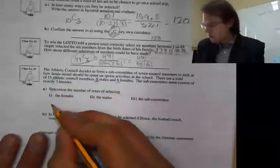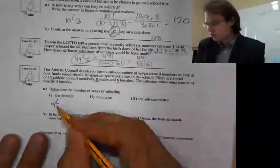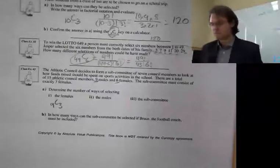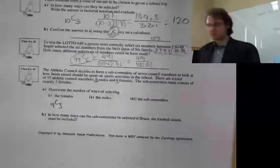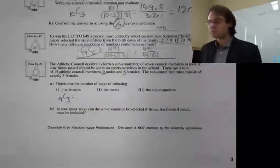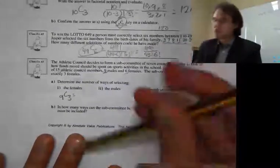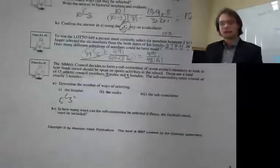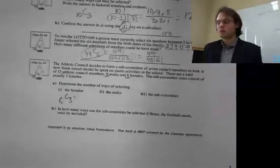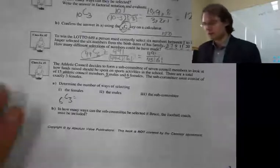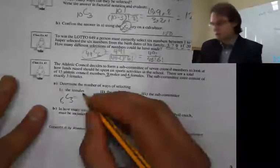How many females are there to choose from? We have 6 females to choose from, and we only want 3. So that's 6 multiplied by 5 multiplied by 4, which is 120 divided by 6, which gives us 20. There are 20 ways to choose those 3 females.